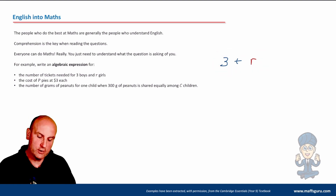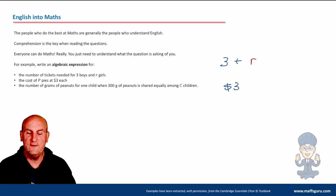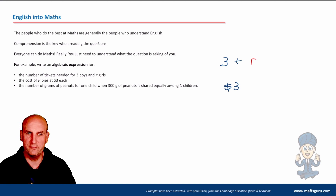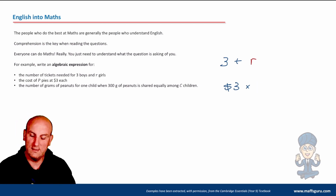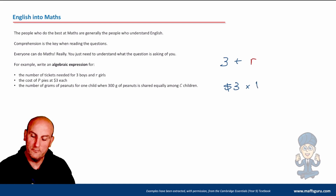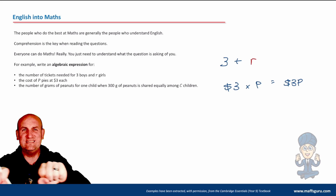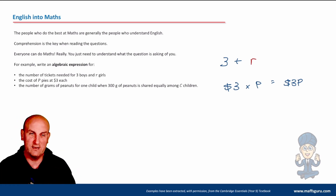The cost of P pies at $3 each. If I buy one pie, it costs three dollars. If I buy two pies, I do three times two. Three pies, three times three. Four pies, three times four. I've got P pies, so I'm going to do three times P - or written simpler, $3P. Because between a number and a letter there is a multiplication.